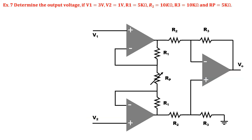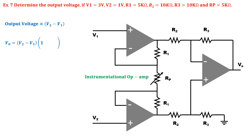This is a special type of operational amplifier called an instrumentation operational amplifier. This circuit is its defined circuit diagram. The output voltage of this operational amplifier is proportional to the difference of the input voltages, and this proportionality depends on its feedback resistance. When solving with node analysis, the output voltage formula for an instrumentation op-amp gives an output voltage of –6 V when the values are substituted.